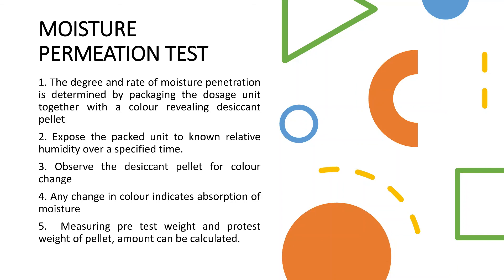To conduct the moisture permeation test, the dosage unit is packaged together with a color-revealing desiccant pellet. The package is then exposed to a known relative humidity over a specified time. The desiccant pellet is observed for color change — any color change indicates absorption of moisture due to high or low humidity conditions.